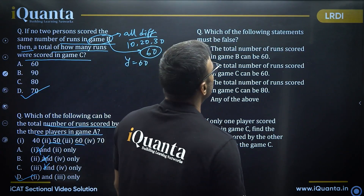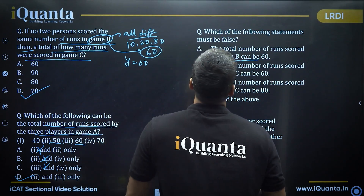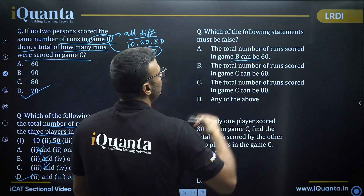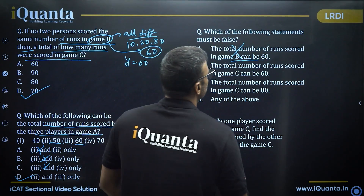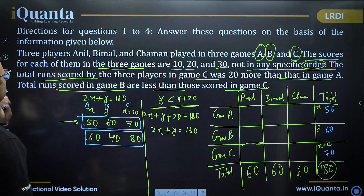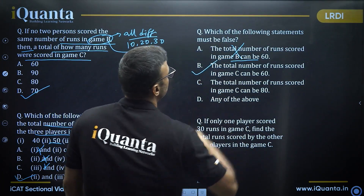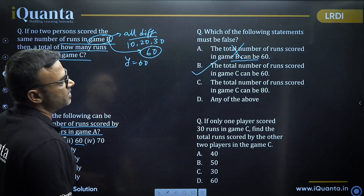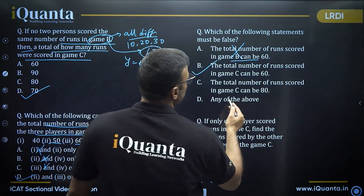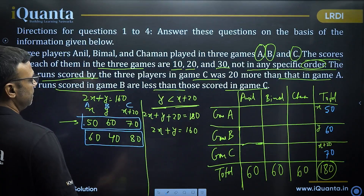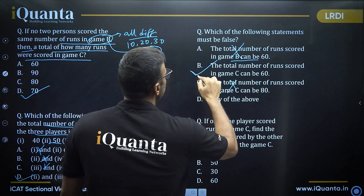Which of the following statements must be false? The total number of runs scored in game B can be 60 — yes, it is possible, so this cannot be false. The total number of runs scored in game C can be 60 — let's check. Game C can be either 70 or 80, so 60 is definitely false. This is the answer. C cannot be 60; it has to be either 70 or 80. Option B is the correct answer.